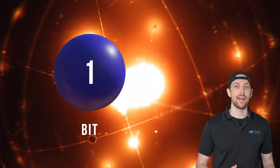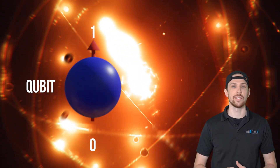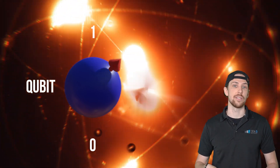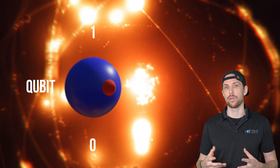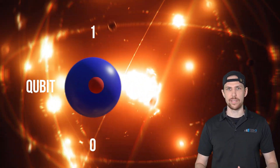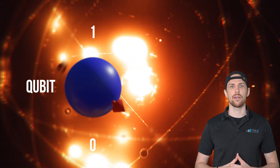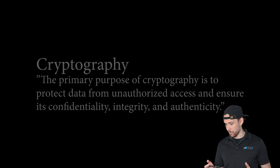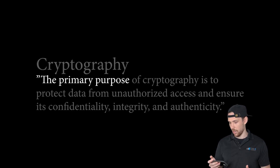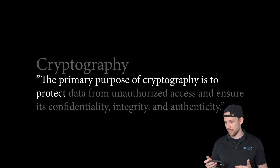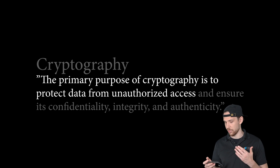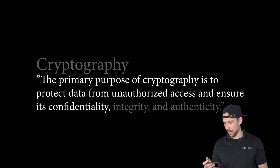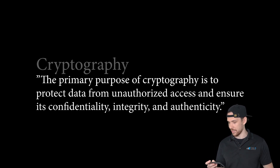All of that said, I still think the metaphor of trying 1 and 0 at the same time is a good metaphor for how they will break through cryptography. Which means I have to explain what cryptography is. The primary purpose of cryptography is to protect data from unauthorized access and ensure its confidentiality, integrity, and authenticity.